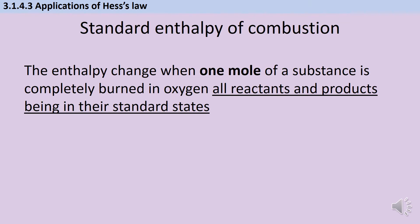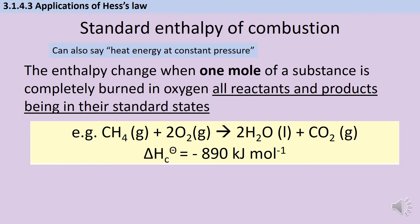The standard enthalpy of combustion can be defined as the enthalpy change, or heat energy change at constant pressure, when one mole of a substance is completely burned in oxygen, with all reactants and products being in their standard states. As you can see from the symbol equation, we have one mole of methane being combusted — it's being completely combusted, so we're just getting water and carbon dioxide, with no carbon monoxide. Don't worry about whether a textbook writes ΔHc or ΔH°c; they do mean the same thing.